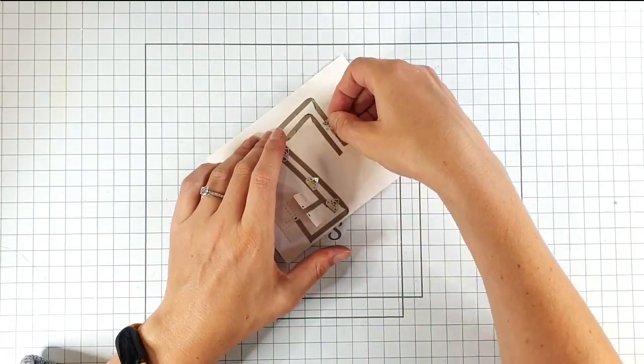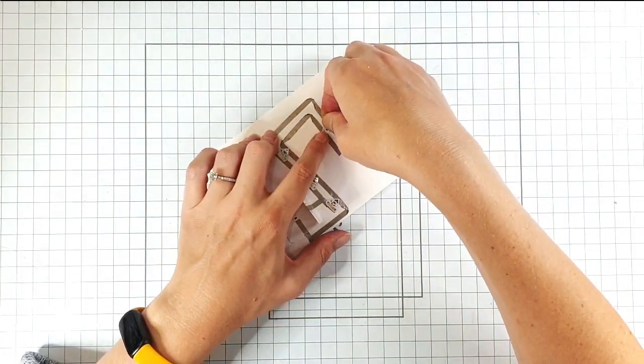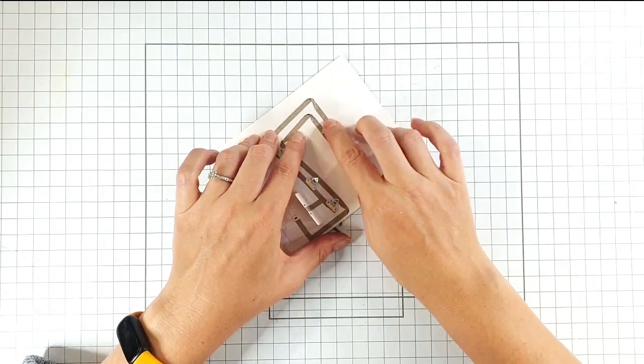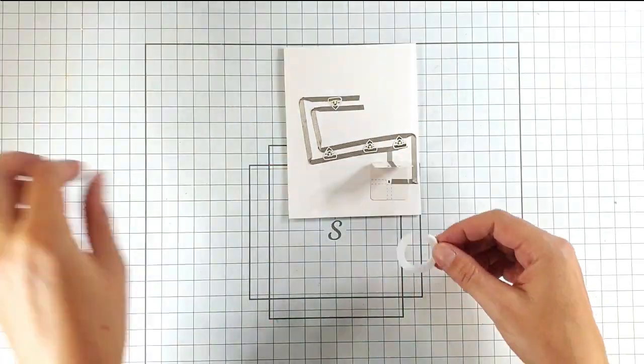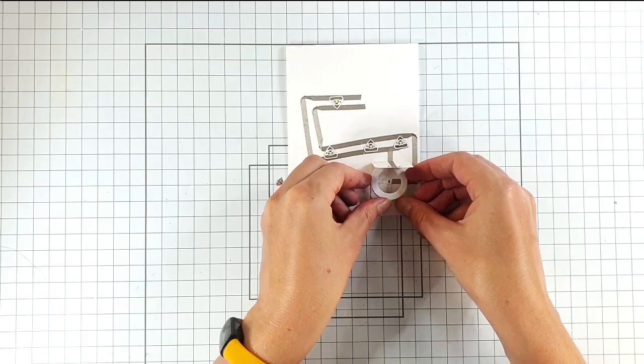And then if you remember, we put this top one on upside down, so pointy bit goes downwards. So now we're going to add in our battery holder.